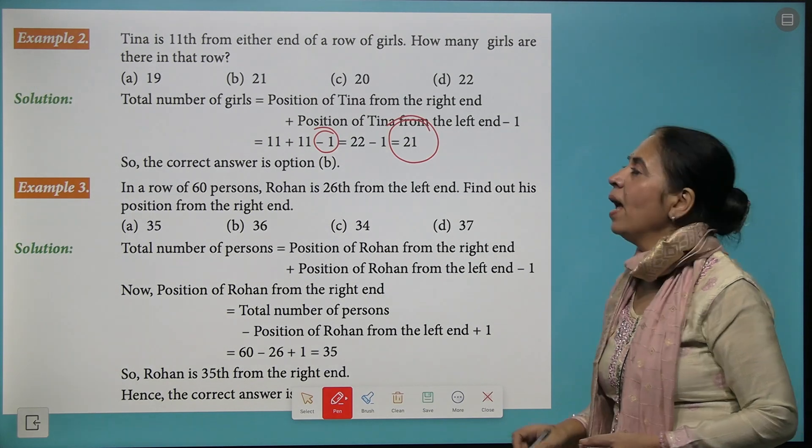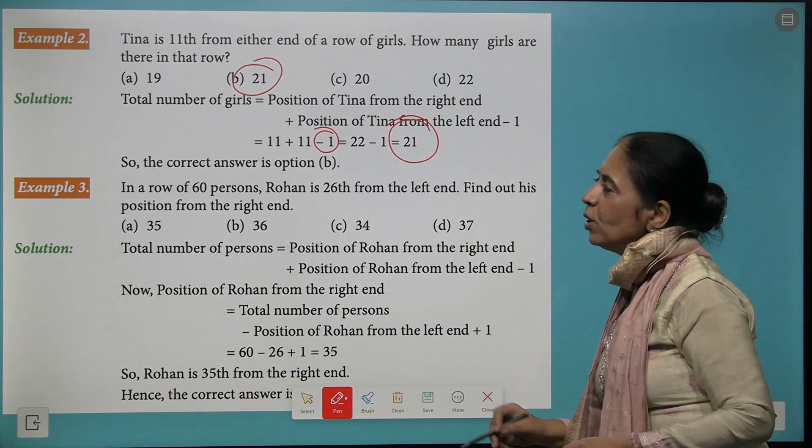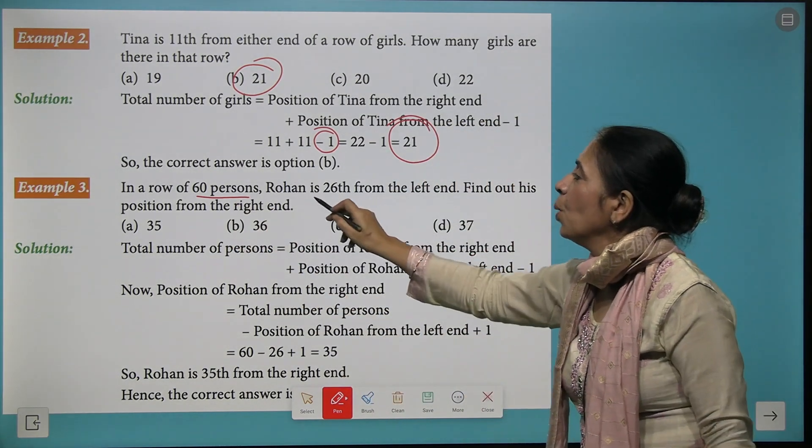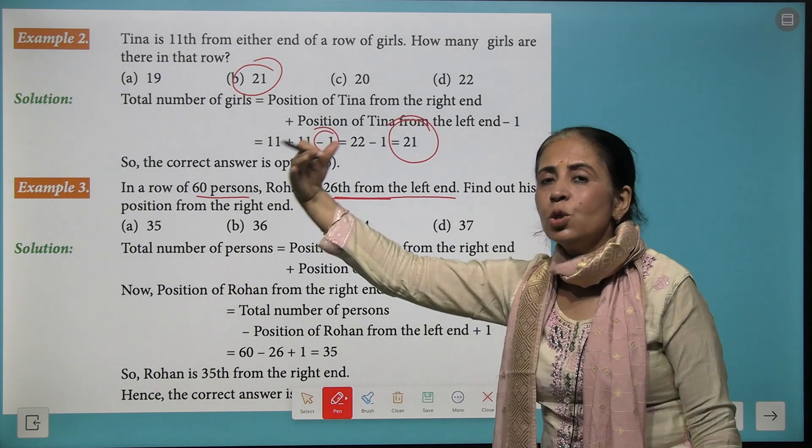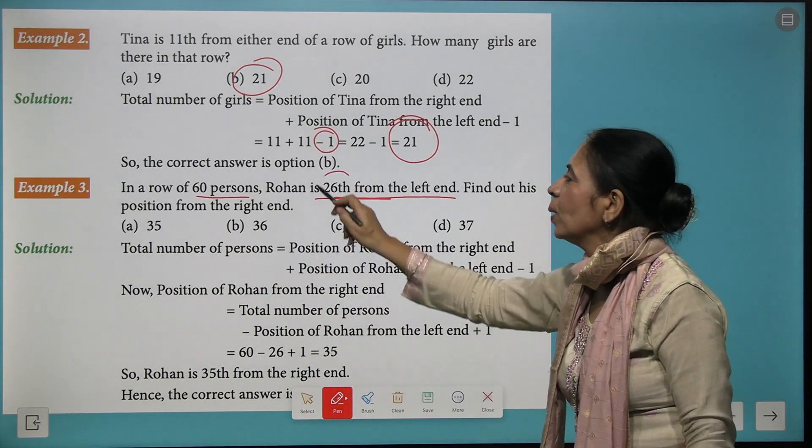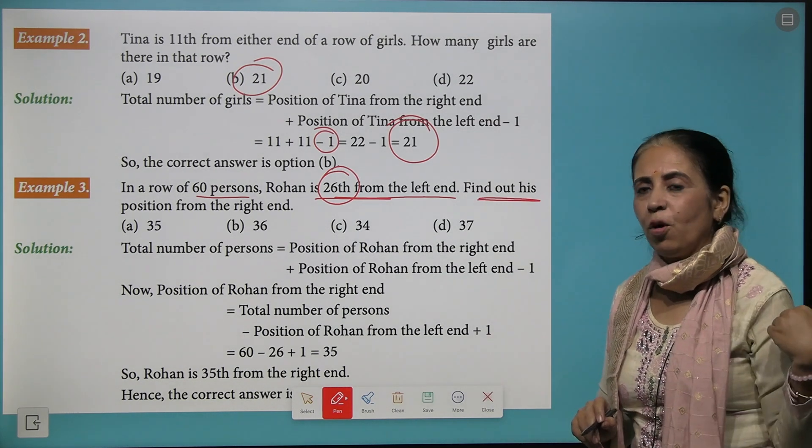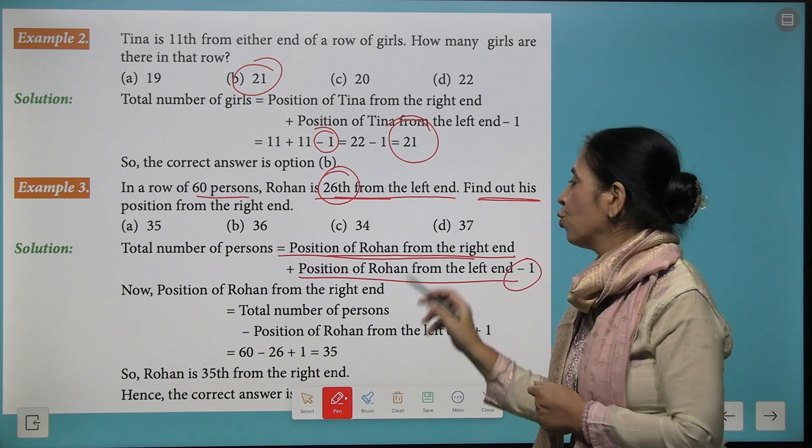Coming to the next one: in a row of 60 persons, Rohan is 26 from the left hand. When you count from the left side, Rohan is taking 26th position. You have to find his position from the right side.